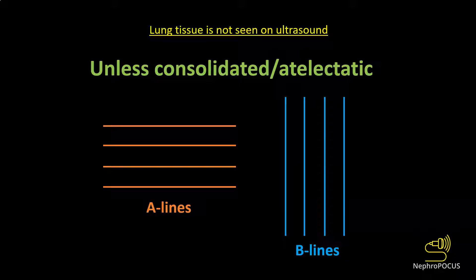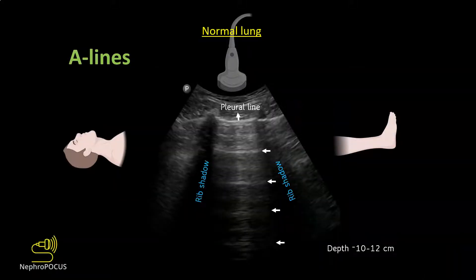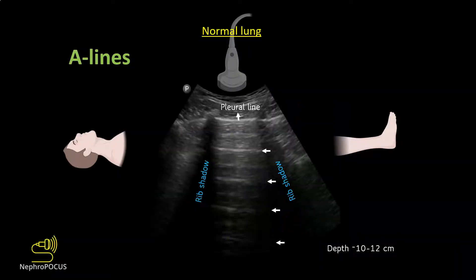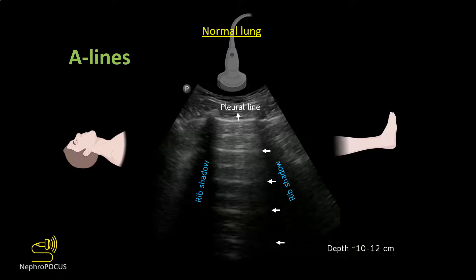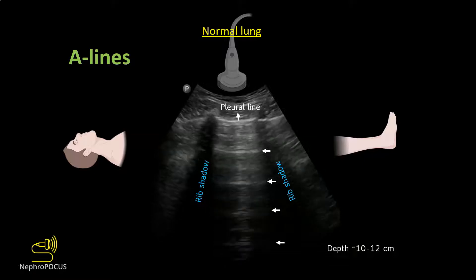If you are seeing horizontal artifacts, which are called A lines, that means it's normal lung. If you are seeing vertical artifacts, which are called B lines, they indicate increased extravascular lung water. This is how a normal lung looks like on ultrasound.